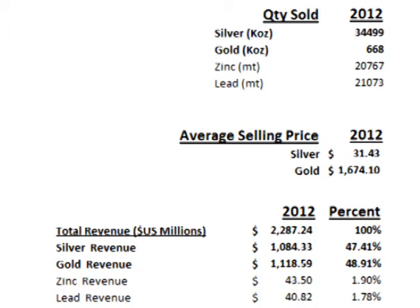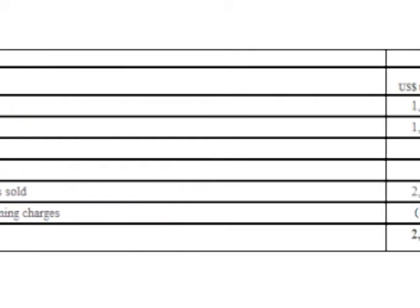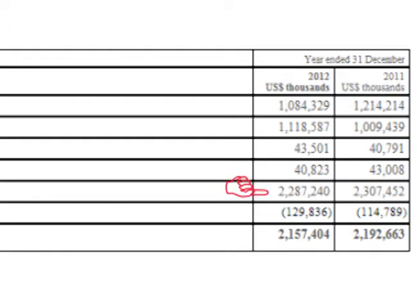Fresnillo's 2012 annual report states that the amount of silver Fresnillo sold from production was approximately 34.5 million ounces. Section 4 of the 2012 annual report covers the revenues from that year broken down by Fresnillo's four main products: silver, gold, zinc, and lead. In 2012 Fresnillo grossed about 2.287 billion dollars before refining charges were subtracted out. Out of that, about 1.84 billion or 47.41% came from silver.